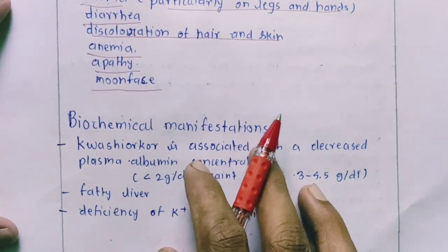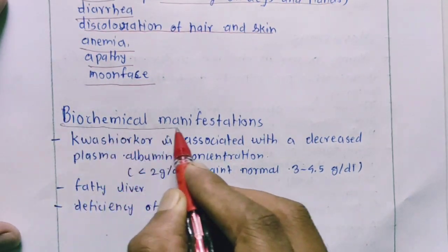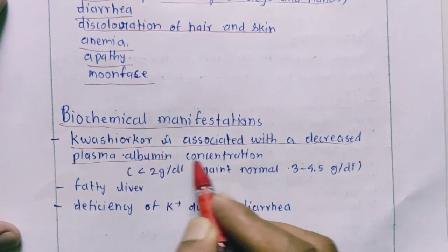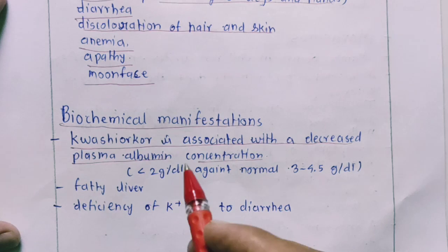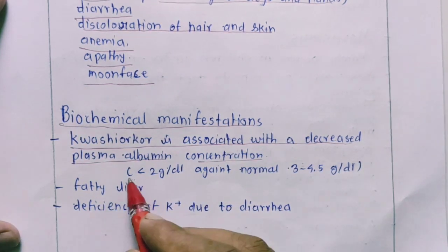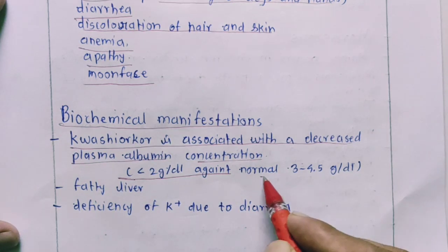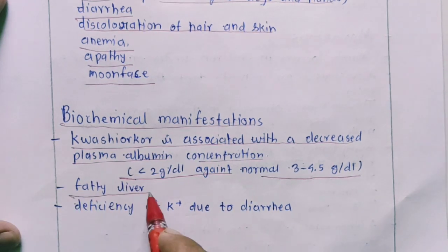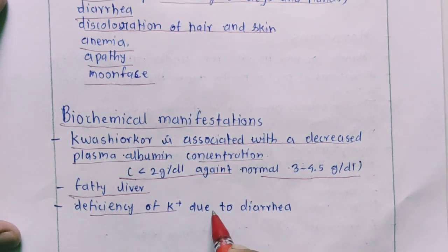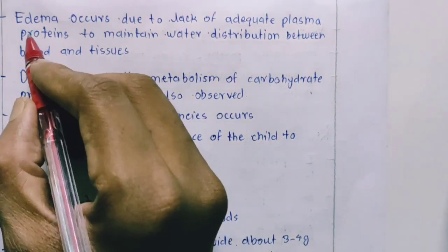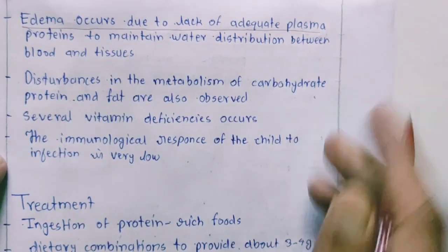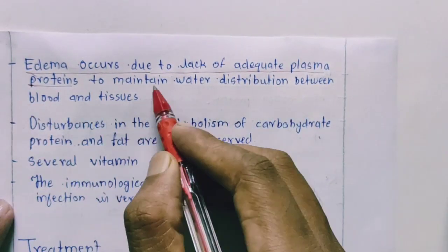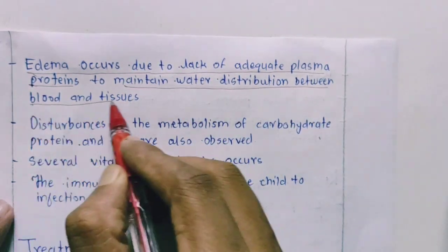The biochemical manifestations include: Kwashiorkor is associated with decreased plasma albumin concentration of around 2 grams per dL, compared to the normal range of 3 to 4.5 grams per dL. Fatty liver is also seen, as well as depletion of vitamin K due to diarrhea. Edema occurs due to lack of adequate plasma proteins to maintain water distribution between the blood and tissues.